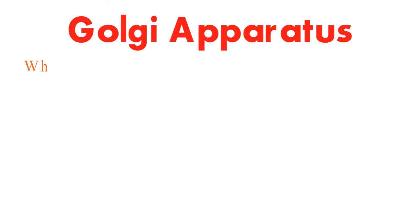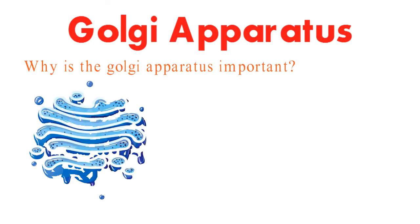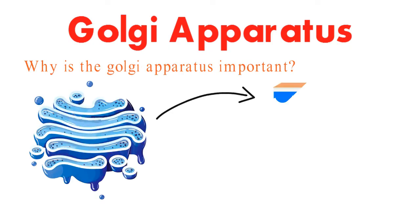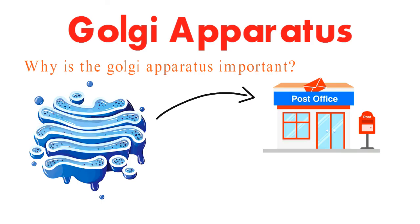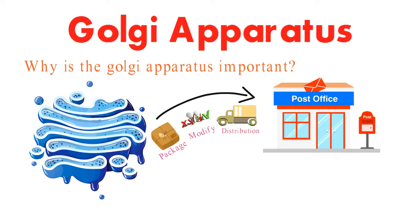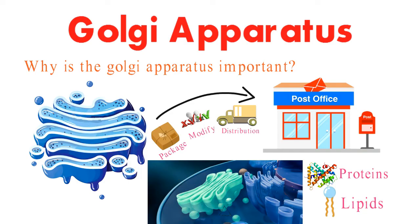Why is the Golgi apparatus so important? Think of it as the cellular post office. It plays a crucial role in packaging, modifying, and distributing molecules like proteins and lipids to their appropriate locations within or outside the cell.